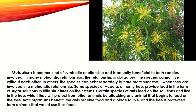Mutualism is another kind of symbiotic relationship, and it is actually beneficial to both species involved. In many mutualistic relationships, the relationship is obligatory — the species cannot live without each other. In others, the species can exist separately but are more successful together. For example, acacia, a thorny tree, provides food in the form of sugar solution on their stems. Certain species of ants feed on the solution and live in the tree, which they protect from other animals by attacking any animal that begins to feed on the tree.